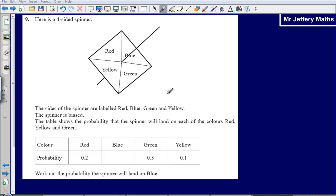Work out the probability the spinner will land on blue. Now what we need to remember here is that all probabilities add up to make 1. So this means that we've got 0.2 plus 0.3 plus 0.1.